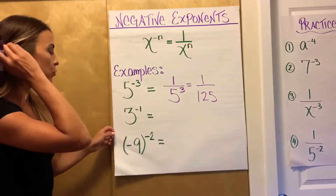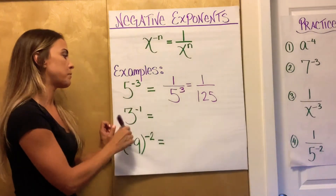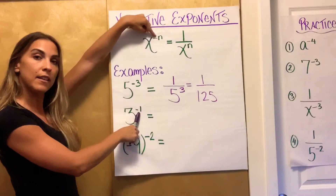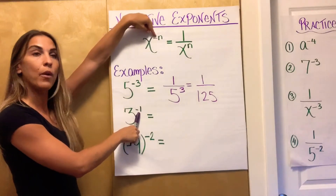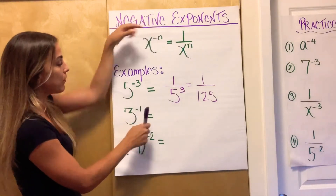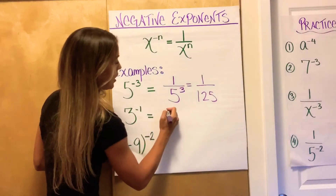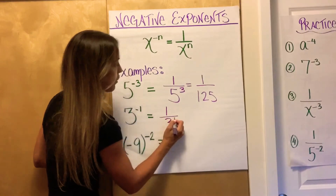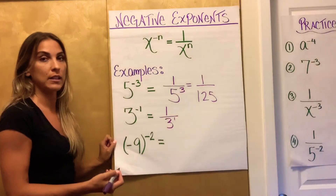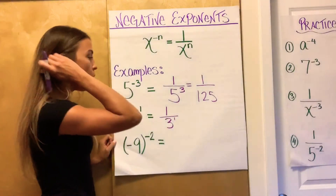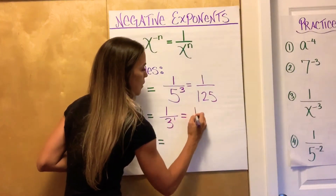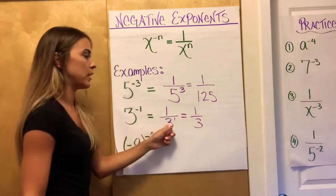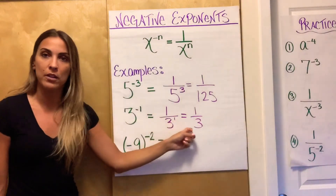Let's take the second example: 3 to the negative first power. I have that negative exponent just like the negative n here. I want it to be positive, so I'm going to change it into 1 over 3 to the first power — the positive one. Or more simply just written as 1/3, because 3 to the first power is just 3.